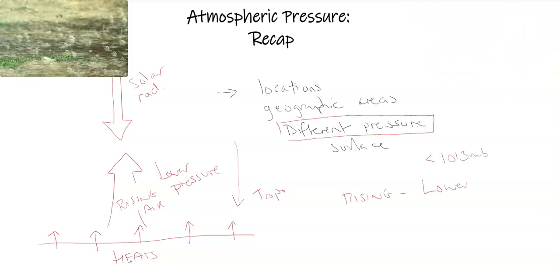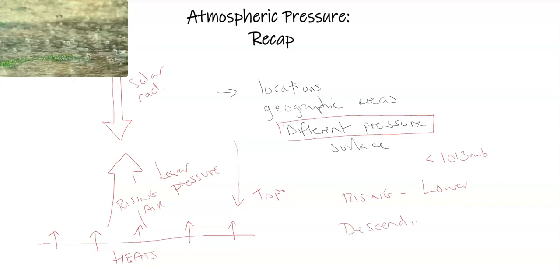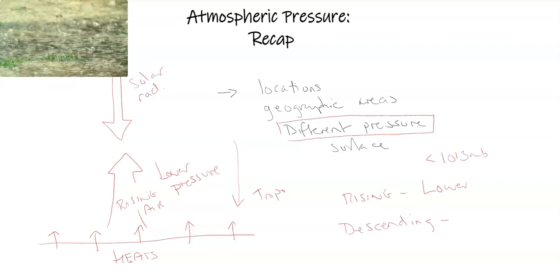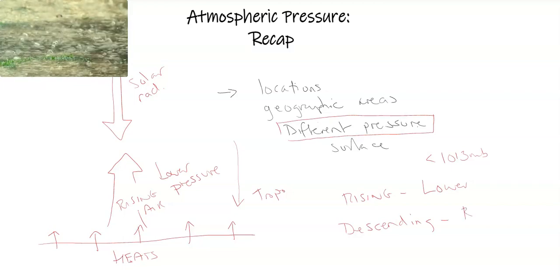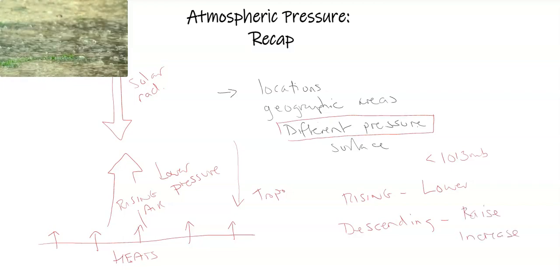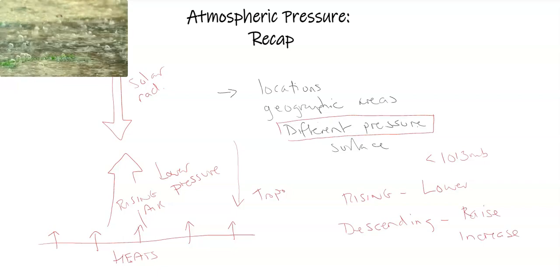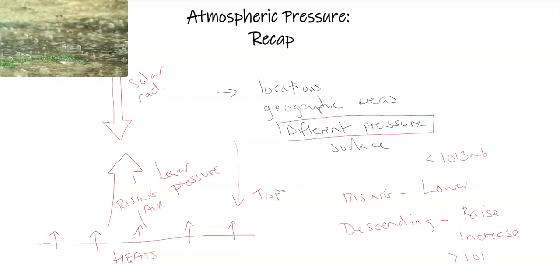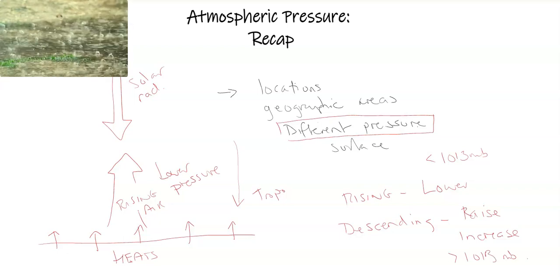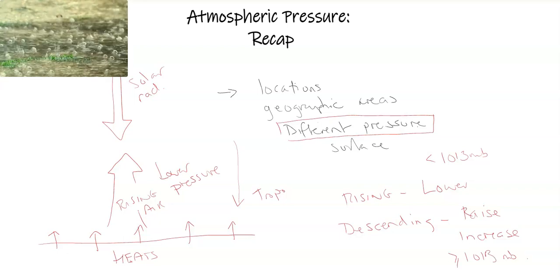And then there's an area that's going to have air that's descending or sinking, which would add more air pushing down on the surface. So this would increase or raise the atmospheric pressure on the surface at that particular location that would be above 1,013 millibars.